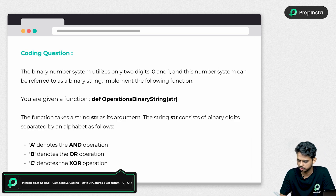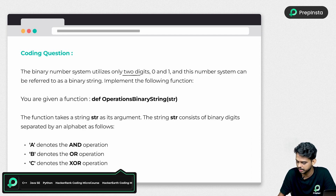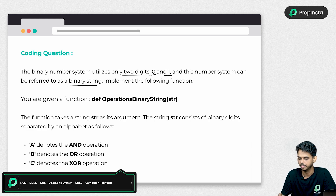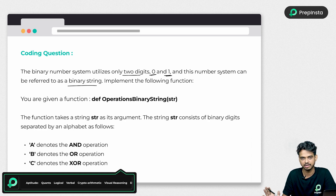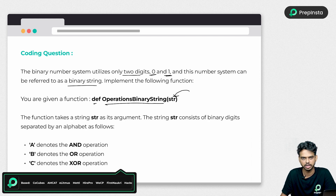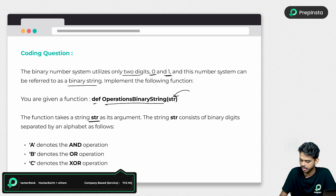Now let's jump into the question. The binary number system utilizes two digits — zero and one. Binary numbers are represented by only these two digits, and this number system can be referred to as a binary string. We have to implement a function called 'operations_binary_string' which takes a string parameter — the string is going to be a binary string.